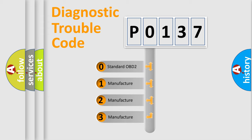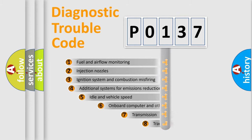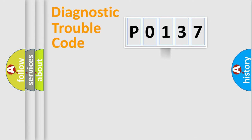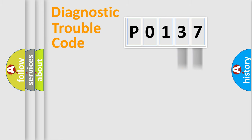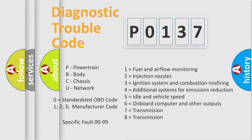If the second character is expressed as zero, it is a standardized error. In the case of numbers 1, 2, or 3, it is a more specific expression of a car-specific error. The third character specifies a subset of errors. The distribution shown is valid only for the standardized DTC code. Only the last two characters define the specific fault of the group. This division is valid only if the second character code is expressed by the number zero.